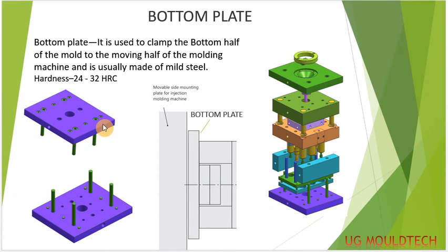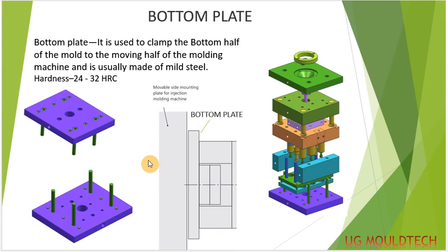This is the last part of our mold — the bottom plate. It is fixed on the moving half of the machine platter and it is clamped. This is the bottom half of the mold fixed to the moving half of the molding machine, and it is made of mild steel. The HRC will be around 24 to 32. We also have one more component left — the guide pillar and guide bush — which is used to align the mold and provide alignment. We will discuss all the other components in the next video.